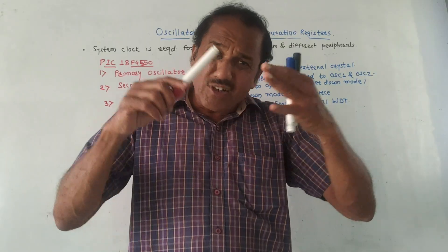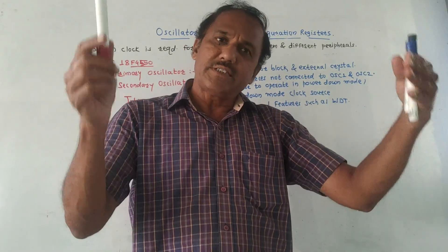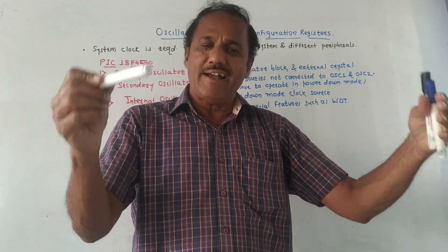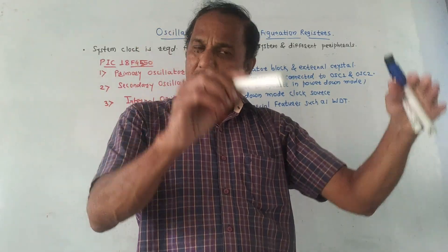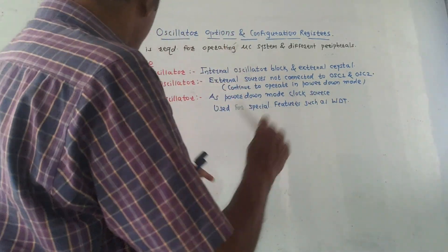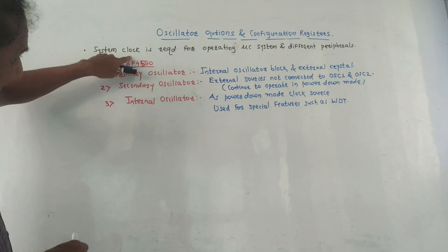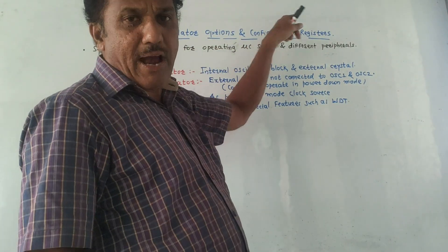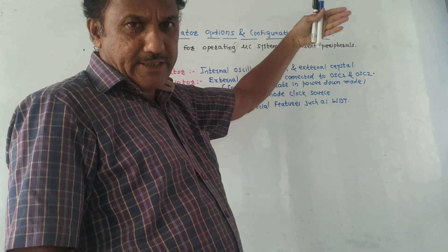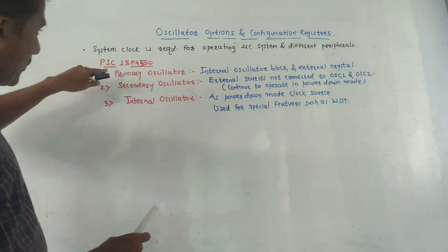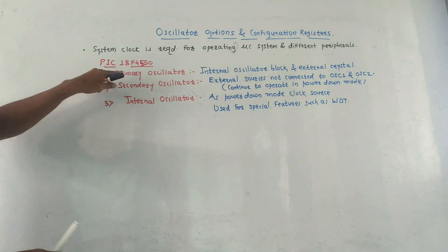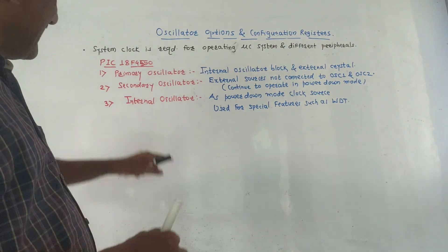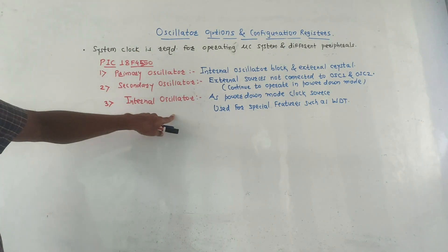As the name indicates, oscillator options means we will be studying the clock signal which is required to operate the PIC microcontroller and different peripherals connected to it. Basically, a system clock is required for operating the microcontroller system and different peripherals connected to it. If we are talking about the PIC microcontroller PIC18F4550, then there are three different types of oscillators.